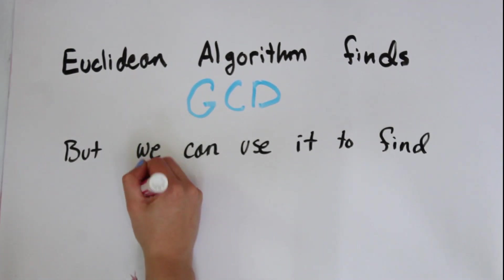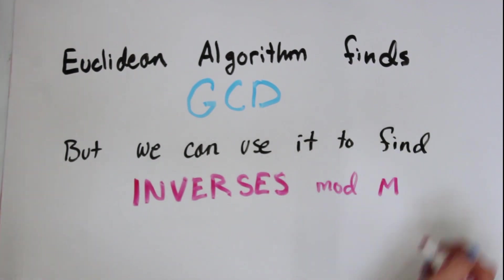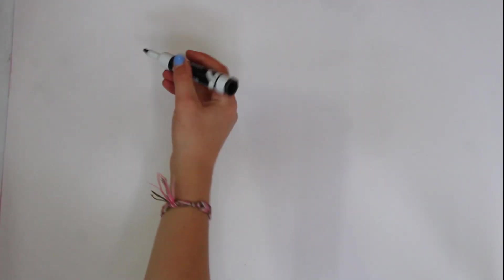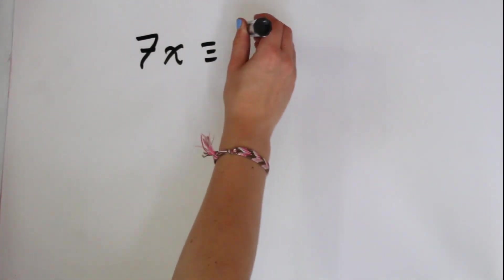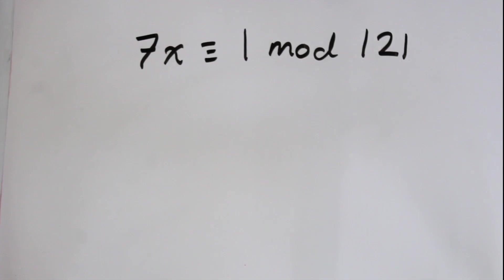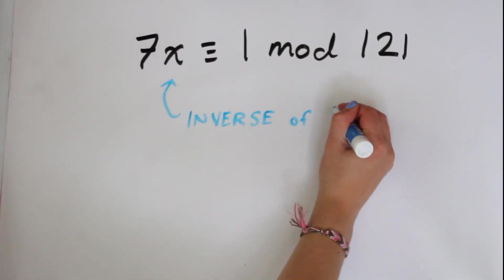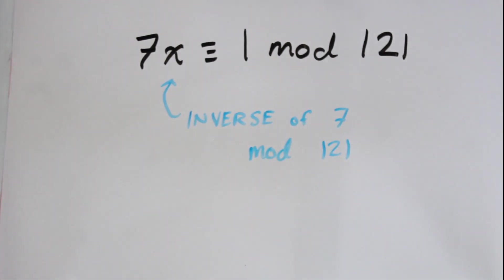But we can also use it to find the inverse of a number mod m. I'll show you that using our congruence that we looked at last time. So 7x is congruent to 1 mod 121. We know that x is the inverse of 7 mod 121.